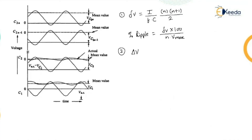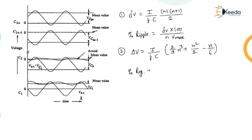The voltage drop ΔV is equal to I / (f · C) multiplied by the bracket (2/3 · n³ + n²/2 − n/6), where n is the number of stages, I is the current in milliamperes, f is the frequency, and C is the equivalent capacitor. The percentage regulation is equal to ΔV divided by (2n · V(max)), since the number of stages goes up to 2n.